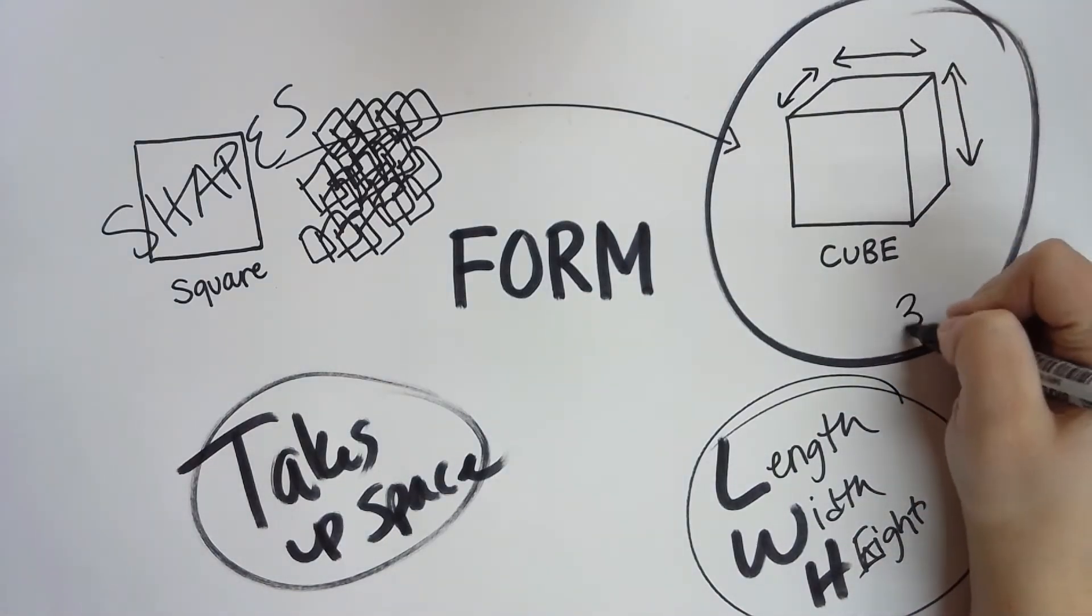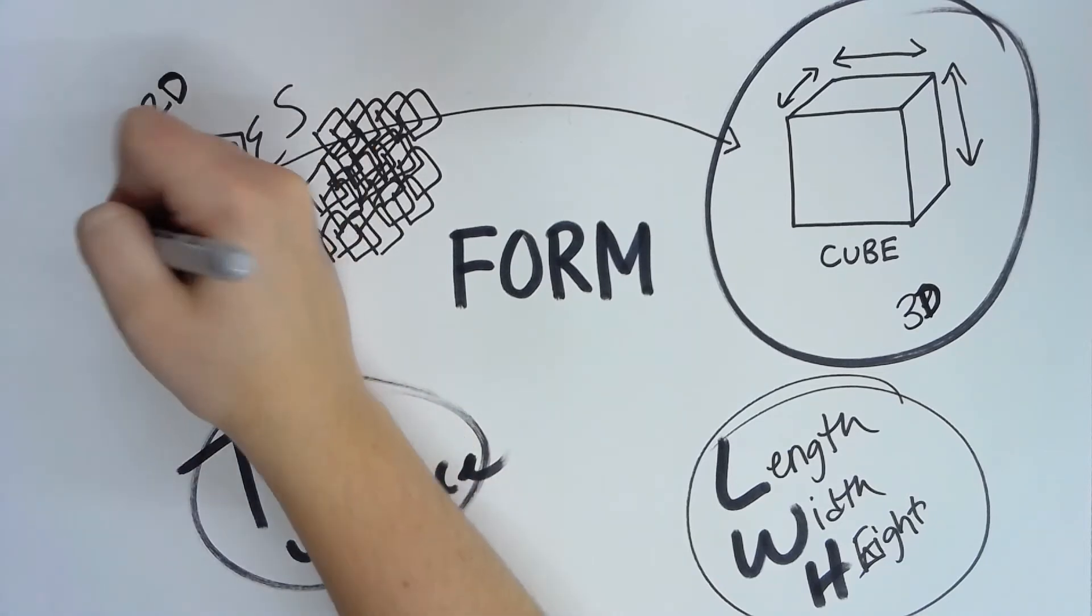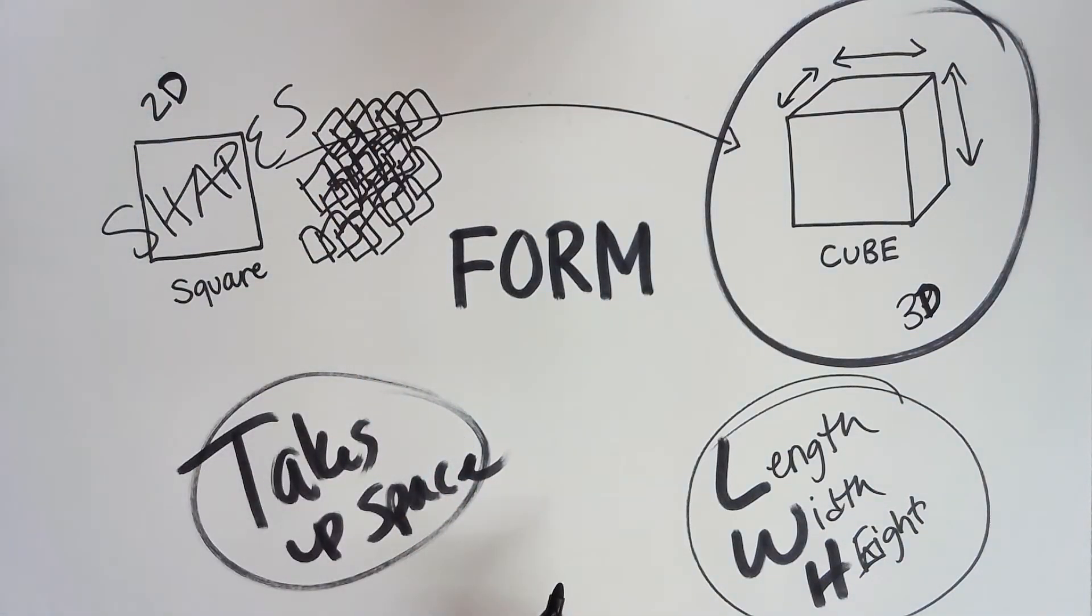That's why cubes are considered something that are 3D. However, shapes are 2D. They just have length and width. That is the big difference between the two of them.